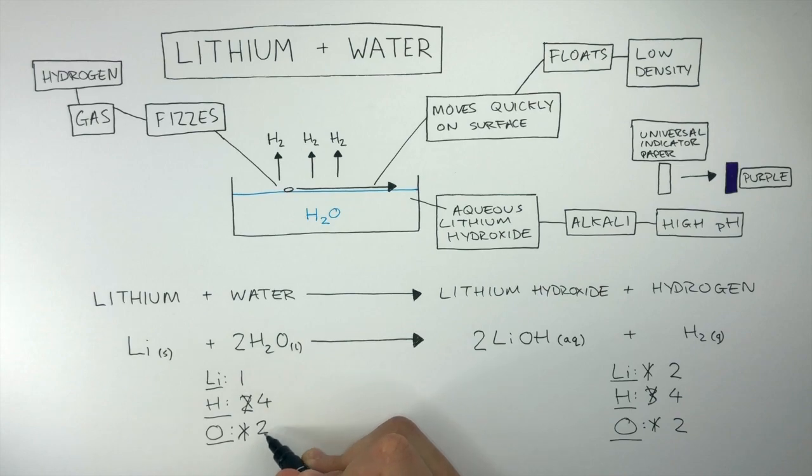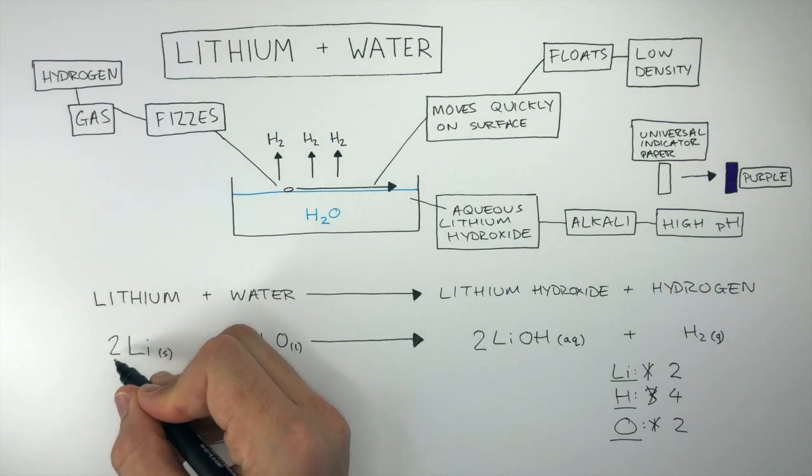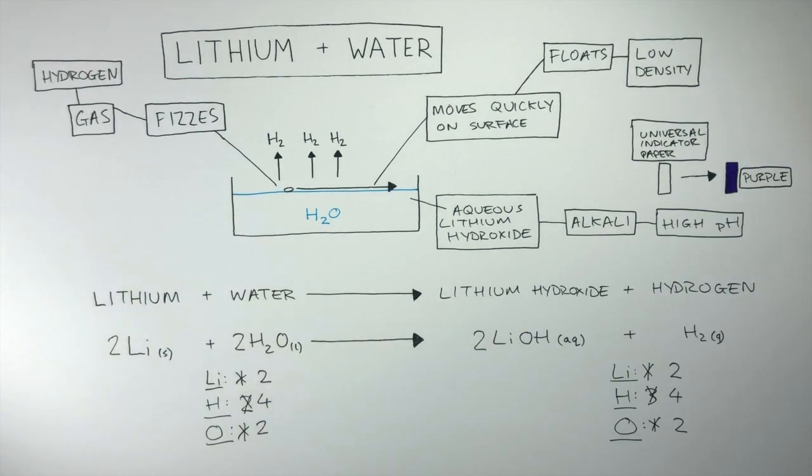Finally, put a big 2 in front of the lithium atom on the reactant side, so there are now two lithium atoms on the left. This chemical reaction is now balanced.